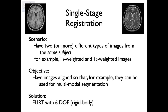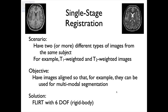We want to register two images of different modalities from the same subject. Same subject means within-subject, so it should be a rigid body transform, because that subject has simply been able to rotate and translate their head — that should be the only geometric difference. Because it's T2-weighted and T1-weighted, it's multimodal, so we need a multimodal cost function. The correlation ratio would be fine, but least squares and normalized correlation are not okay. Correlation ratio or mutual information would both be totally fine, as they can cope with different MRI modalities.